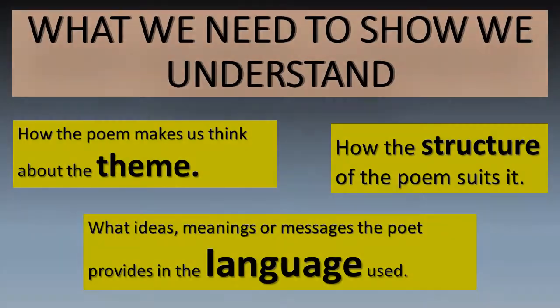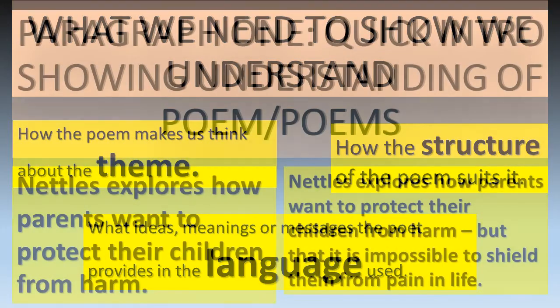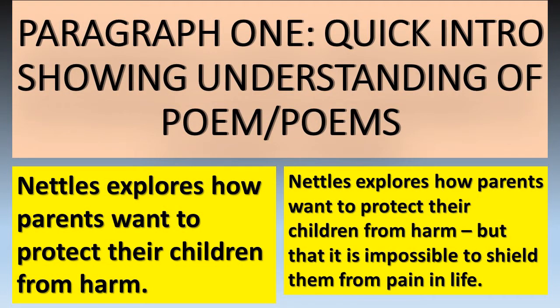What we need to show we understand in the exam — and this is the same for writing about poetry from your anthologies — is we need to explore how the poem makes us think about the theme. So today we're thinking about relationships; this is about a father's relationship with his son, about parenthood and the love that you have for your children. Then we need to think about the structure of the poem and what the writer's chosen and why. And then we're going to look at the meanings and messages provided in the language used.